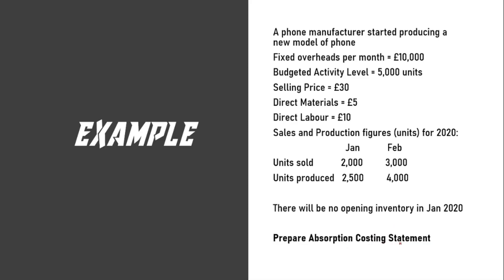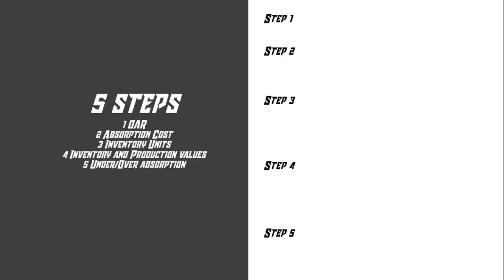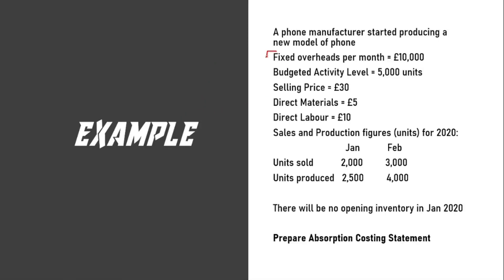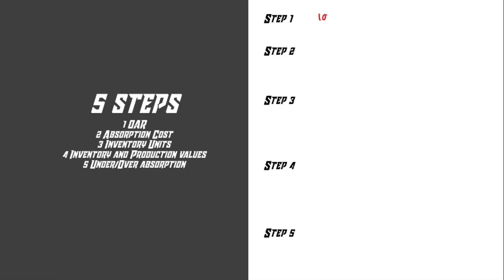So let's see how this works. Step one is to calculate the overhead absorption rate. We're going to use the two figures: £10,000 and 5,000 units — overheads and activity level. So we write £10,000 divided by 5,000 units, and that gives us an overhead absorption rate of £2.